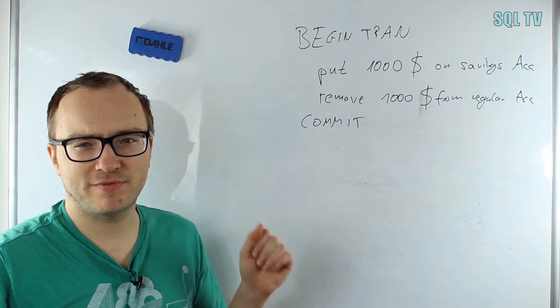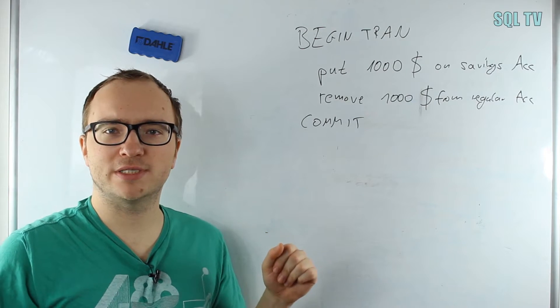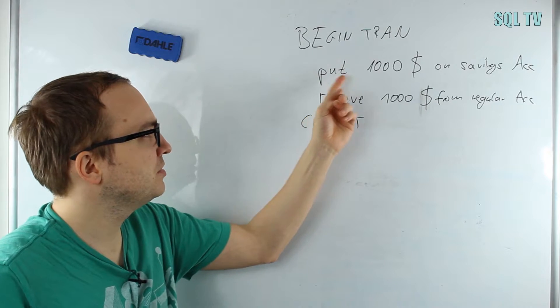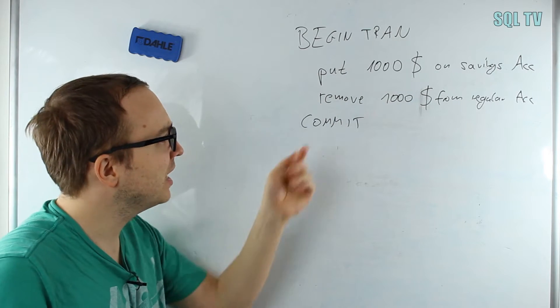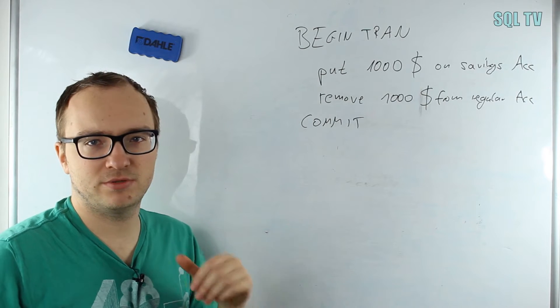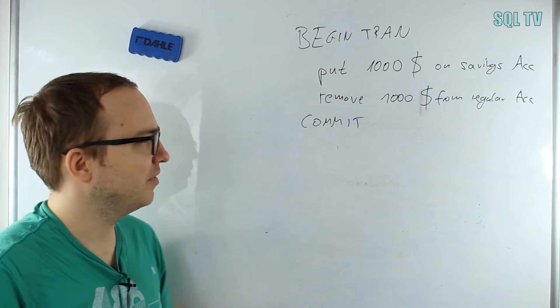To clarify each of the four ACID properties, let's have a look at this sample transaction, which is not regular T-SQL code but just for clarification. We have a transaction here that puts $1,000 on my savings account and takes the $1,000 from my regular account, then we commit the transaction. A regular money transfer between two accounts.